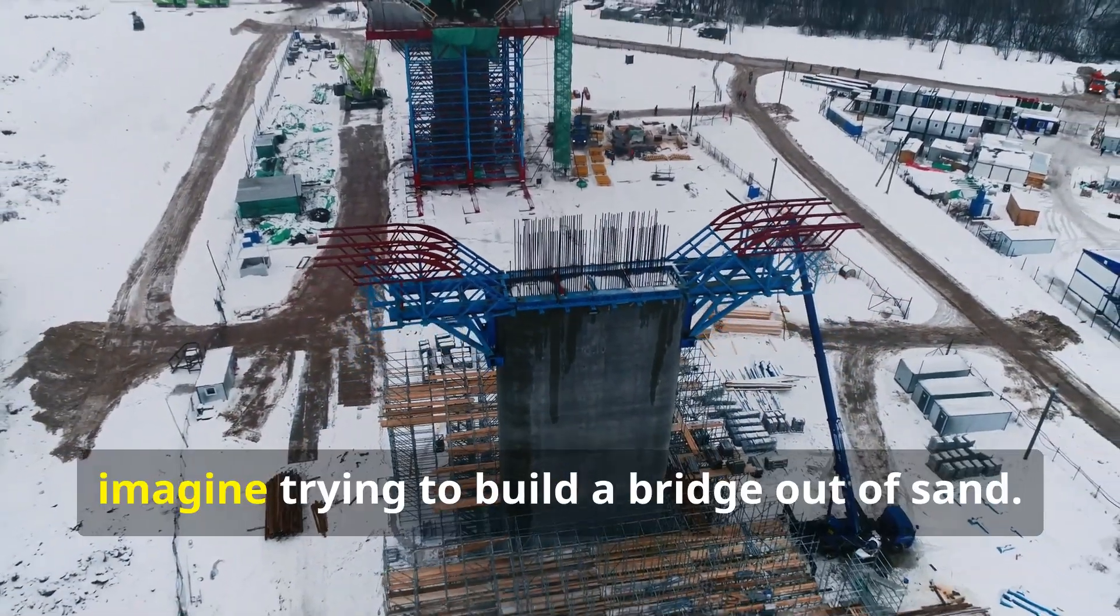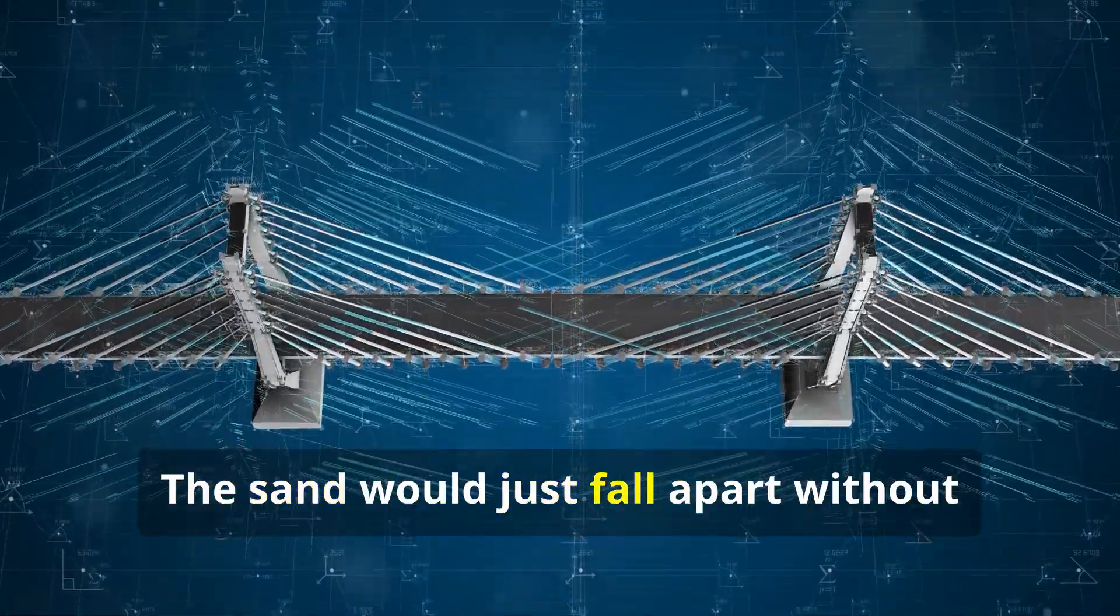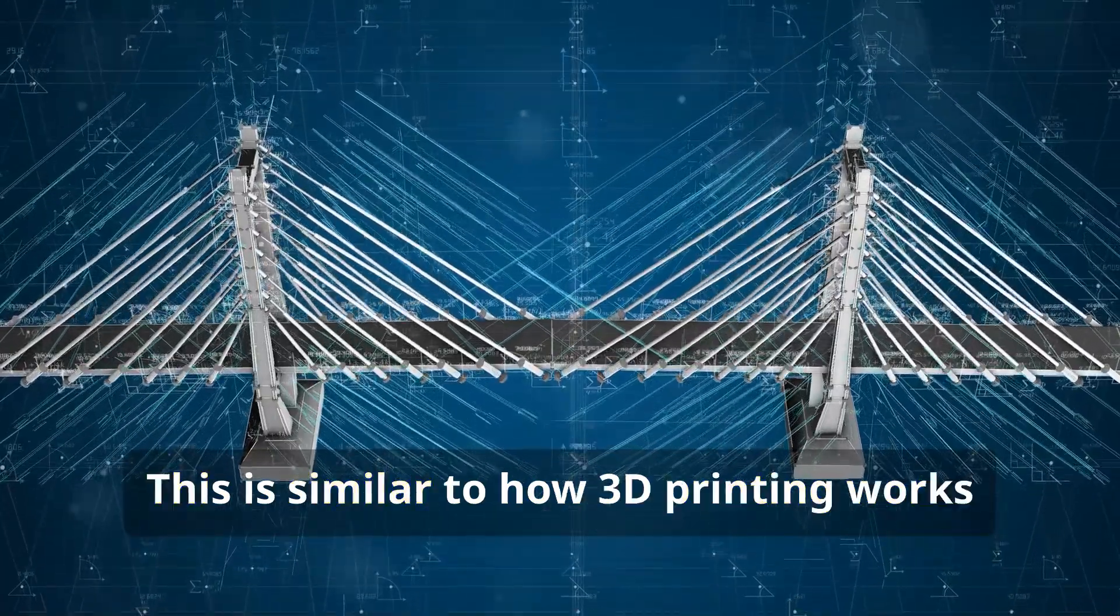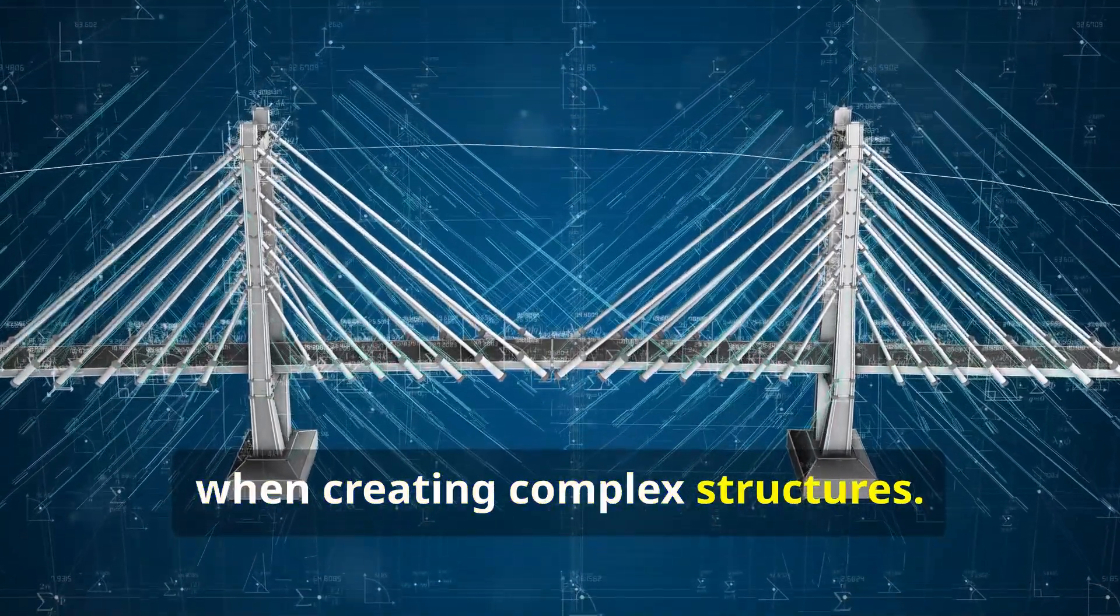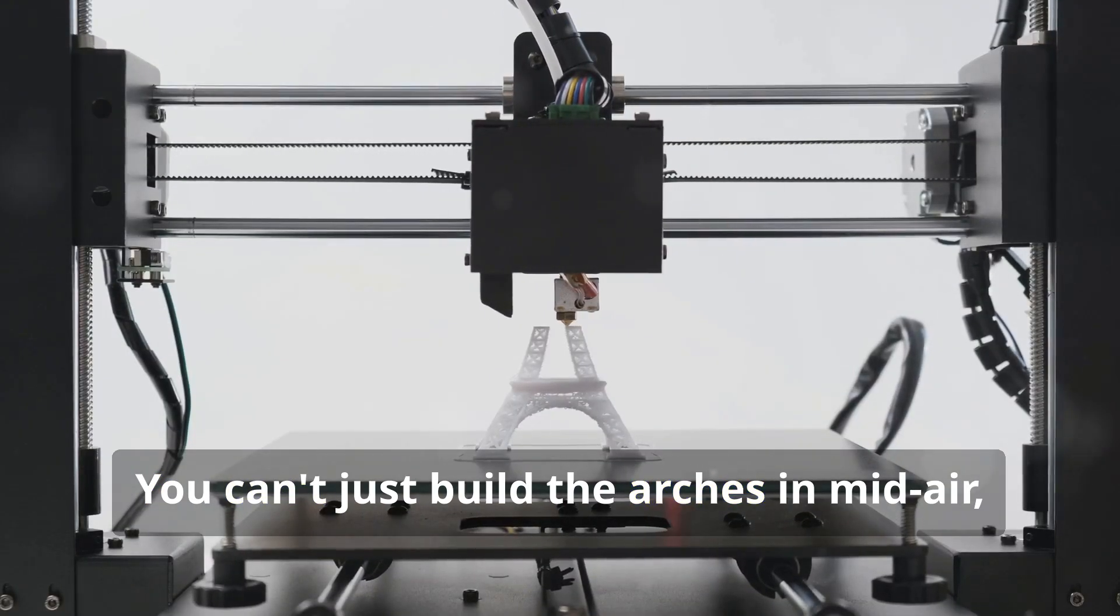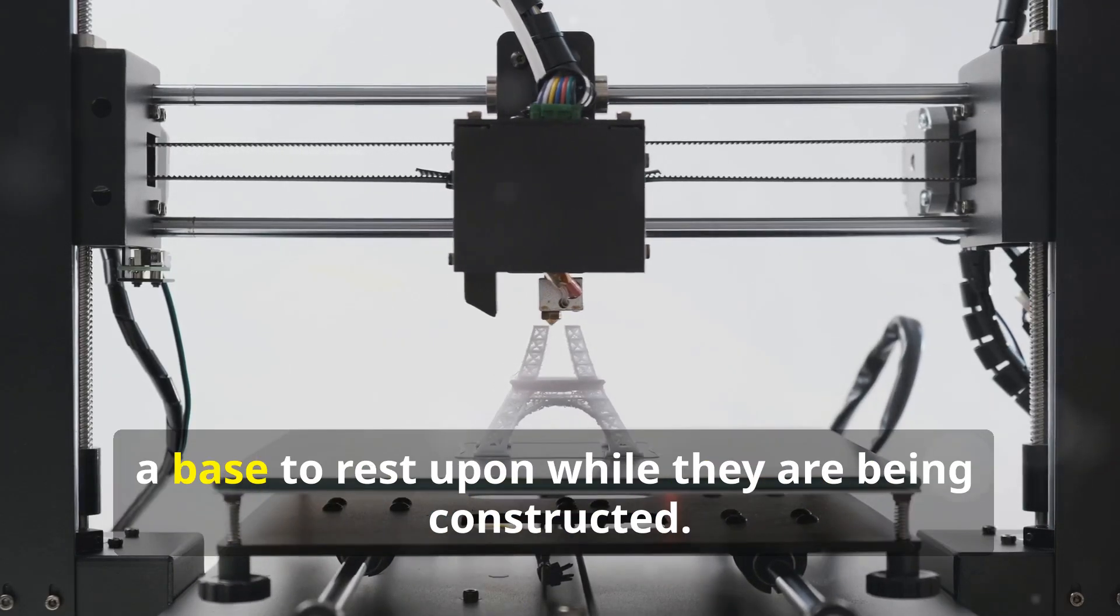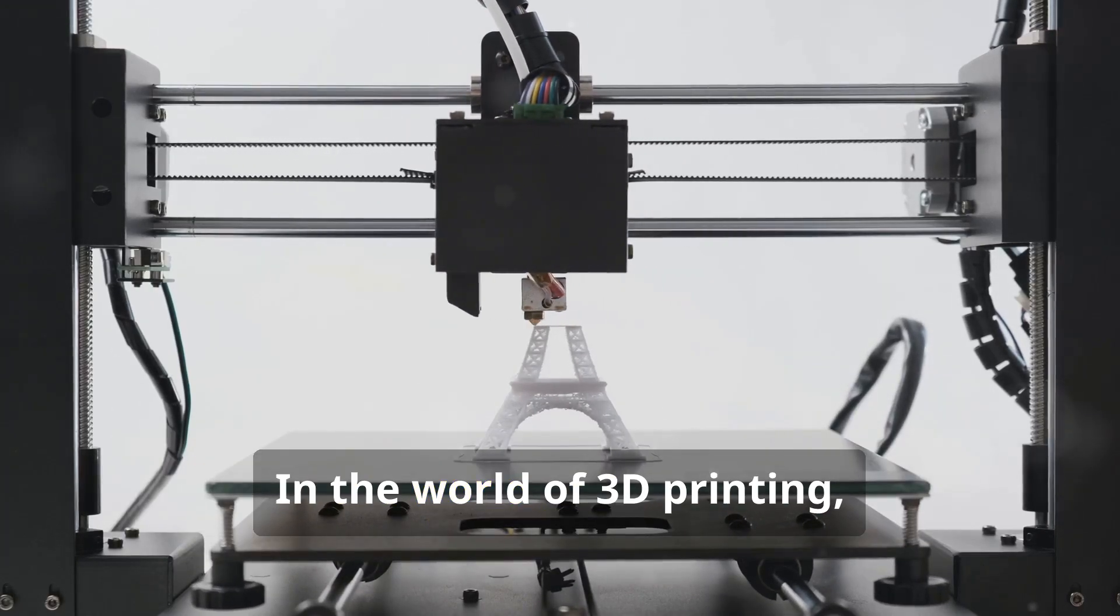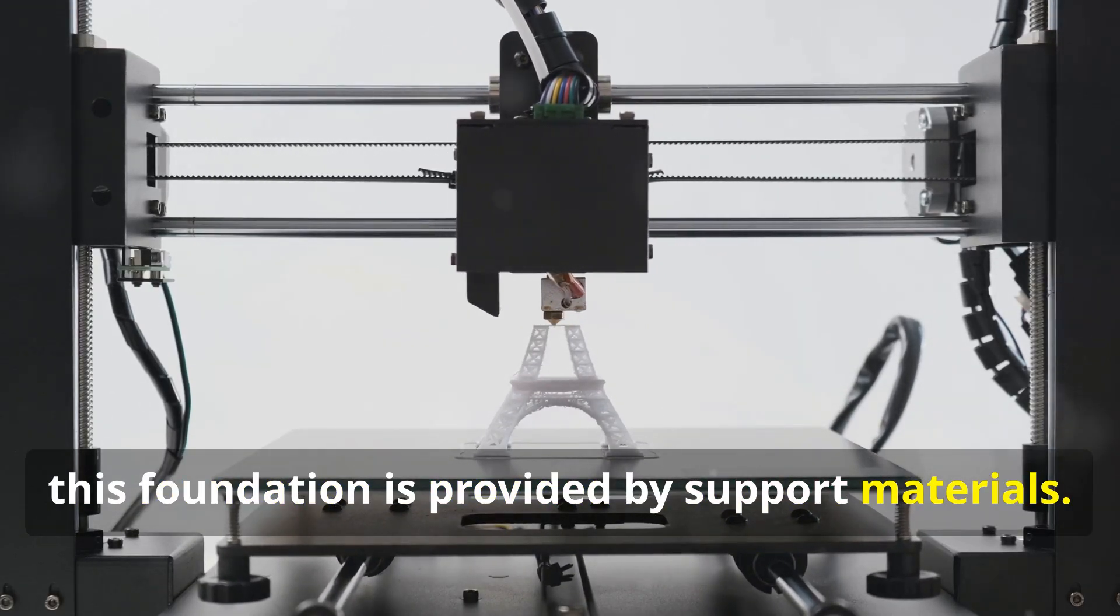Now imagine trying to build a bridge out of sand. It sounds impossible, right? The sand would just fall apart without something to hold it together. This is similar to how 3D printing works when creating complex structures. You can't just build the arches in midair, can you? The arches need a foundation, a base to rest upon while they are being constructed. In the world of 3D printing, this foundation is provided by support materials.